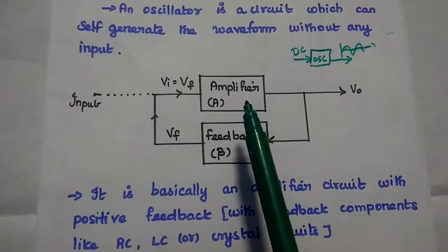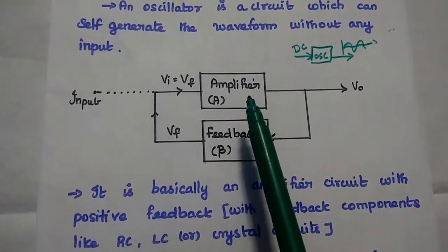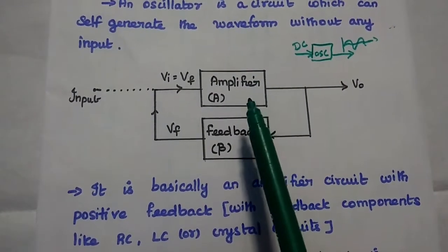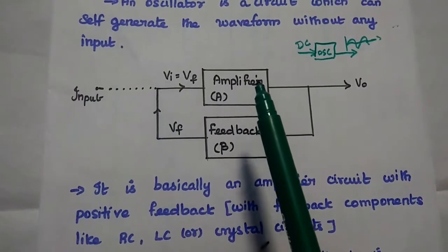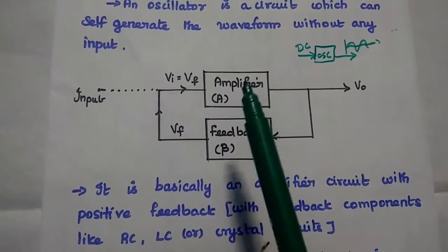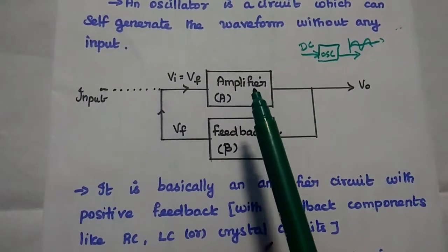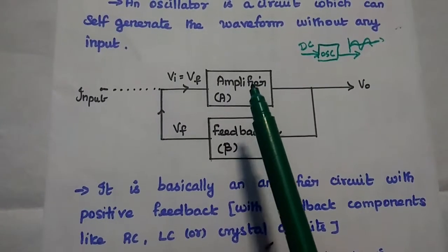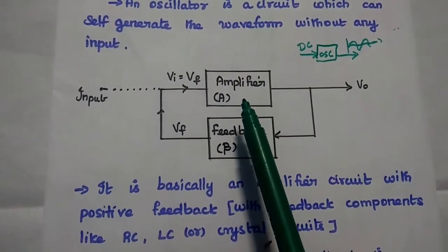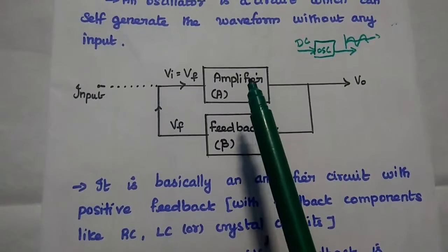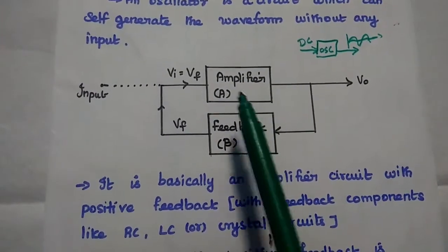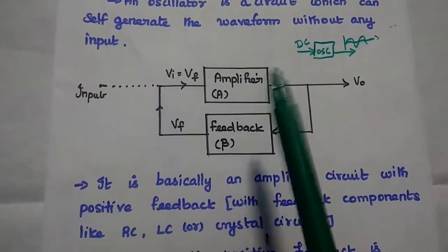So here the amplifier consists of an active device. It can be either BJT, FET or OPAMP. So here the active device requires DC supply voltage for its operation. So we are giving only the DC supply voltage to this amplifier, not the input.